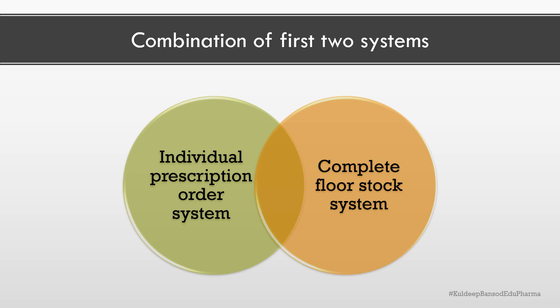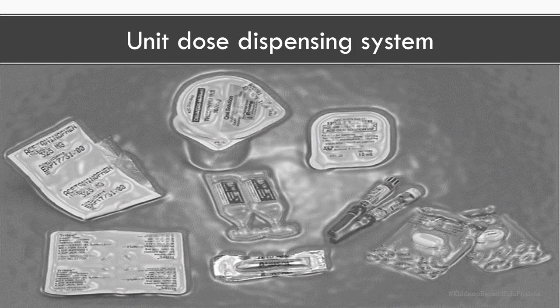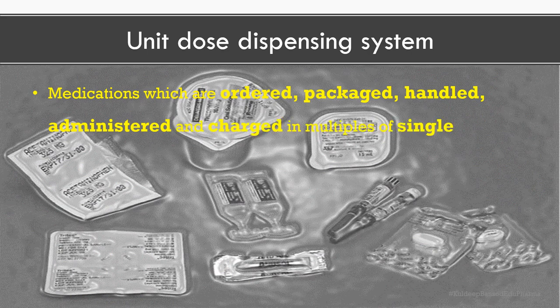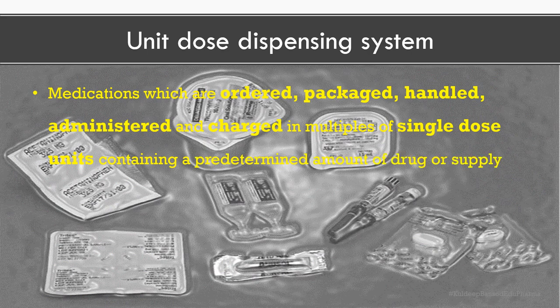Unit dose dispensing system can be defined as medications which are ordered, packaged, handled, and charged in multiples of single dose units containing a predetermined amount of drug or supply sufficient for one regular dose application or use. In other words, unit means a single dose dispensing system.